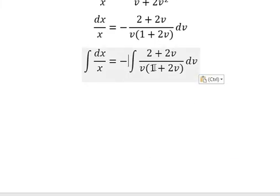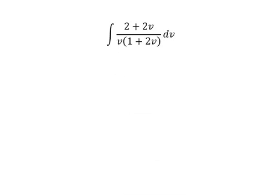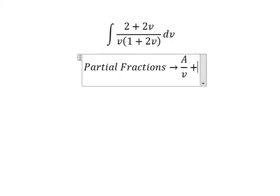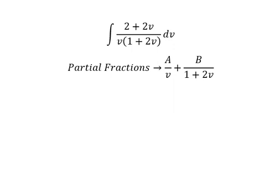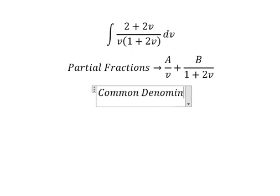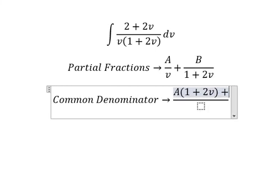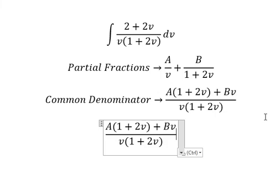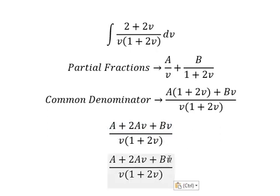Now I will concentrate on this integral only. We can use partial fractions. I will write capital A over v and capital B over (1 plus 2v). We find a common denominator: capital A multiplied by (1 plus 2v) plus capital B multiplied by v. Expanding gives A plus 2Av plus Bv.